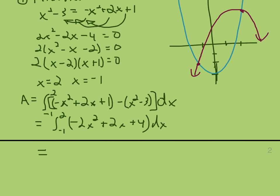So we'll get negative 2 thirds x cubed plus x squared plus 4x, evaluated from negative 1 to 2.